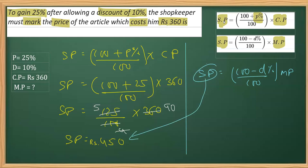Now here we have to get the mark price and we know the selling price as we have already calculated in the question. So we can replace this SP with its value, which we just calculated, as it is coming as 450 is equal to 100 minus discount percent is 10%, this is 10 over 100.